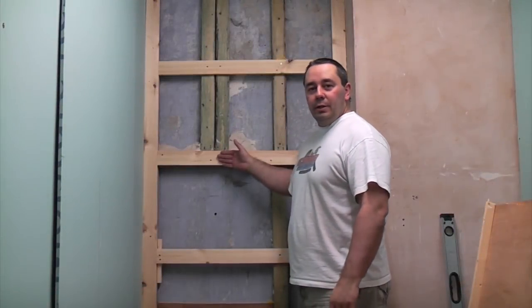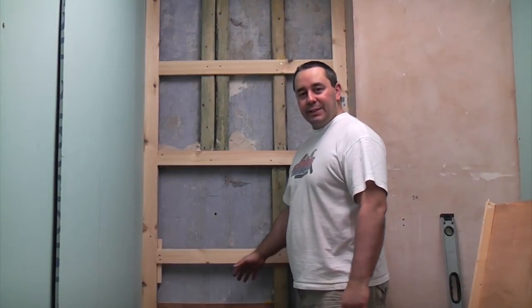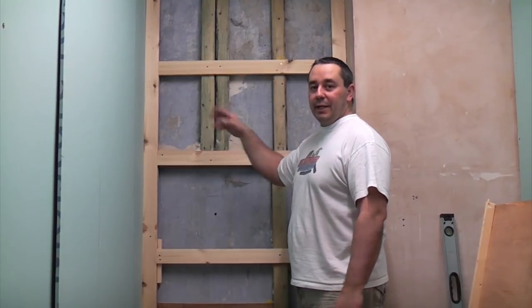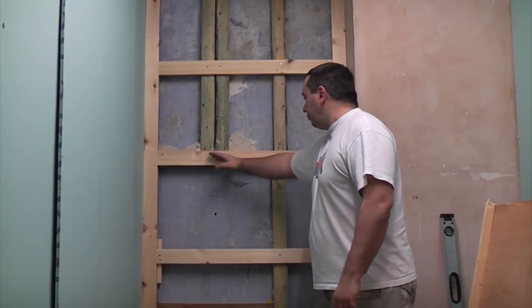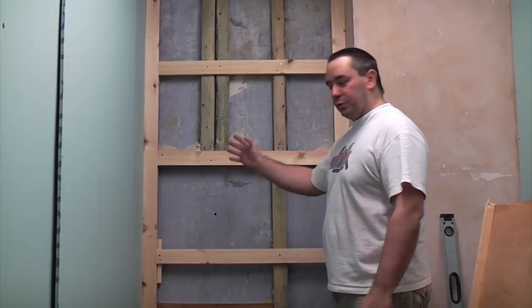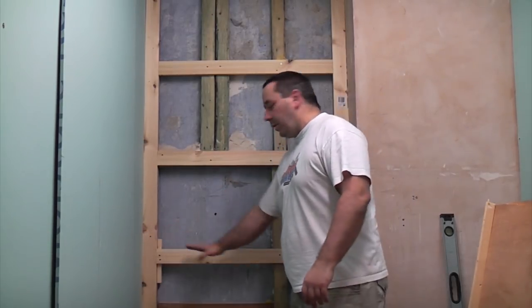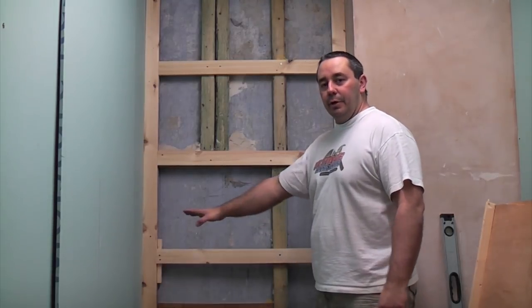This is the wall where the wall-mounted tap is, and we're going to put the shower here at a later date. I've run these battens across and I've squared the whole thing up. If I get a square and put it in that corner, the corner is completely square, which will make it a lot easier when we come to fitting the bath.